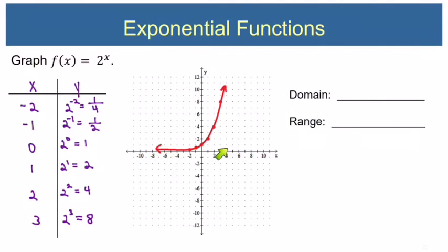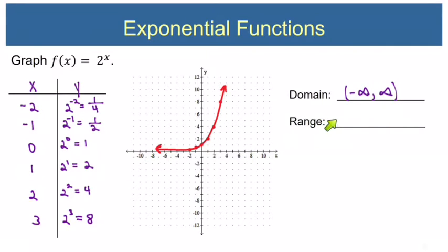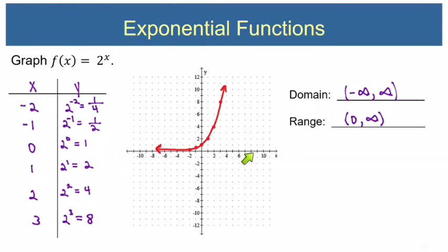The domain of this function is negative infinity to positive infinity — any number can be plugged in. The range, as you can see, is from 0 to infinity. But we can never have a y value of 0, so when we write the range we use parentheses on the 0: (0, ∞), not [0, ∞), because 0 is not included.